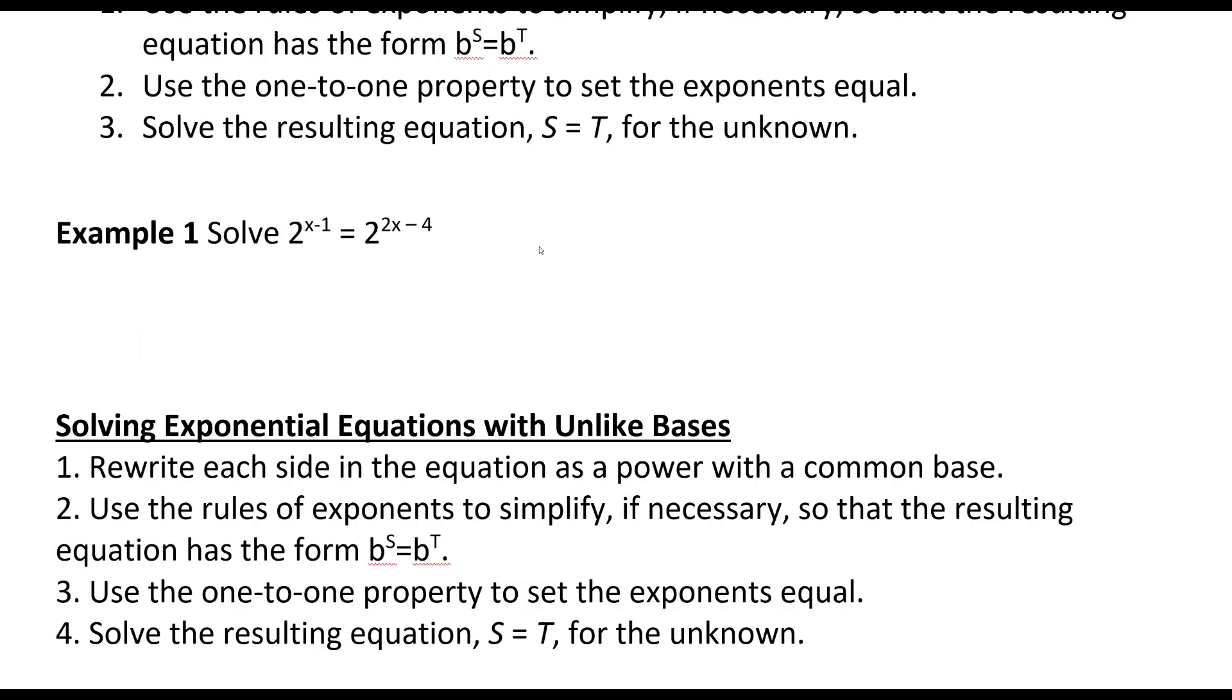Here we have 2 to the x minus 1 equals 2 to the 2x minus 4, so we say x minus 1 equals 2x minus 4. Solving for x, I'll subtract x from both sides, add 4, so 3 equals x. That's it.